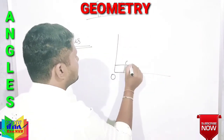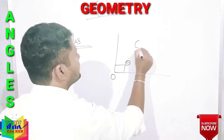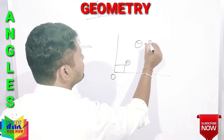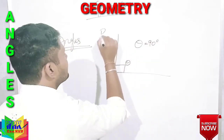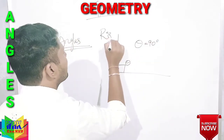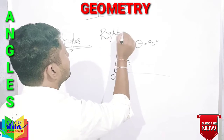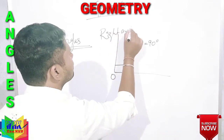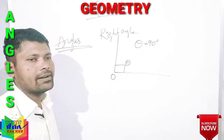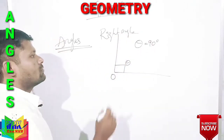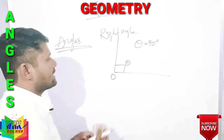Right angle: if theta equals 90 degrees, then it is said to be a right angle.